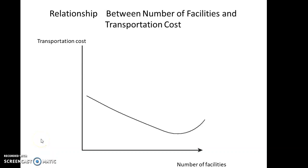From the graph showing the relationship between number of facilities and transportation cost, we can see that transportation cost decreases as you increase the number of facilities, but only to a certain extent. After that point, transportation cost increases. The reason is that moving products from a central facility to a greater number of facilities leads to more distance and higher cost. So when deciding the number of facilities, we must choose the optimum level to minimize total transportation cost.